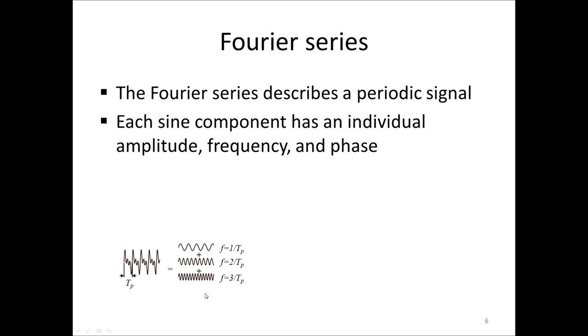But not only that, we also know exactly which frequencies these signs have by knowing the period of the signal. So the lowest frequency has a frequency of one over the period of the composed signal. And then we have frequencies of two times that, three times that, etc.